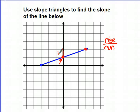Now I need to move to the point on the right. I will run 1, 2, 3. So the rise is 1, the run is 3. So my slope of this line is 1 third.